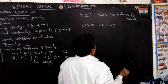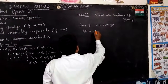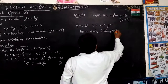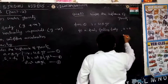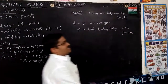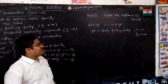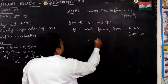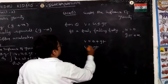For a freely falling body, the initial velocity U = 0, and G is taken as positive since the body is moving towards the center of the earth. So V = 0 + GT, then V = GT. This is equation number 4.